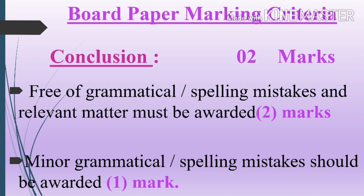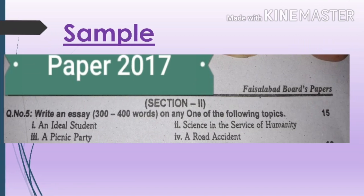Third, conclusion — this is also very important and bears 2 marks. Free of grammatical and spelling mistakes with relevant matter must be awarded 2 marks. Minor grammatical and spelling mistakes should be awarded 1 mark.